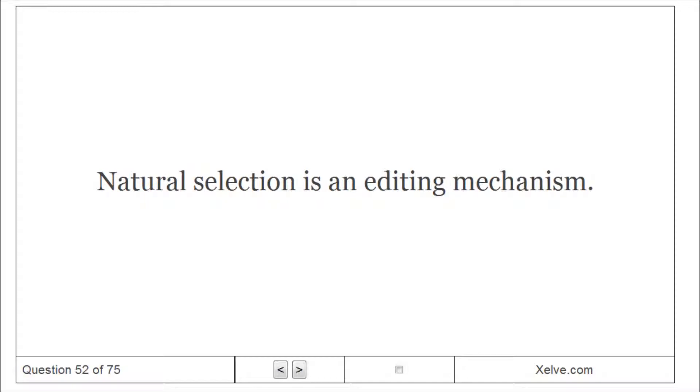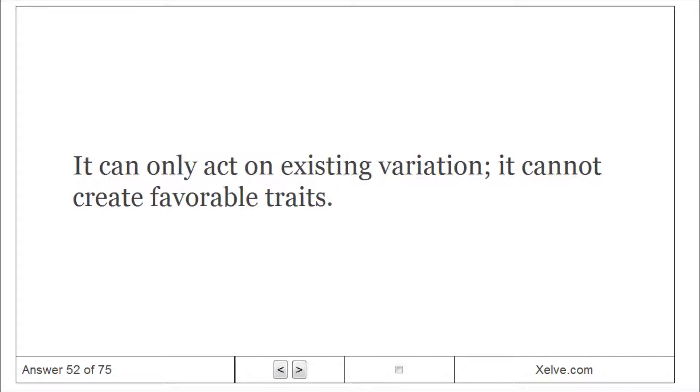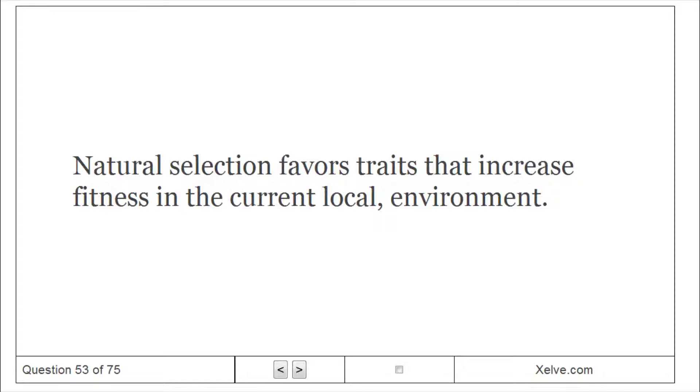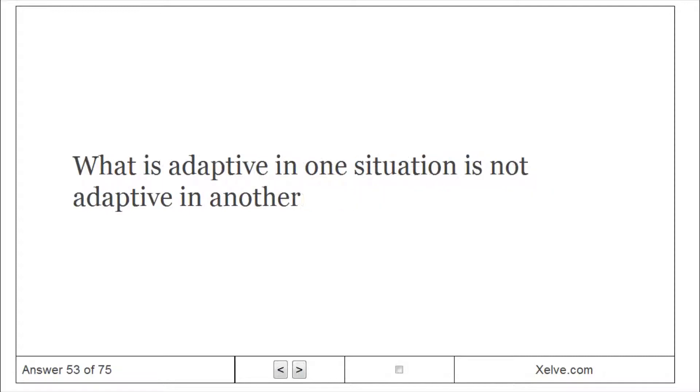Natural selection is an editing mechanism. It can only act on existing variation, it cannot create favorable traits. Natural selection favors traits that increase fitness in the current local environment. What is adaptive in one situation is not adaptive in another.